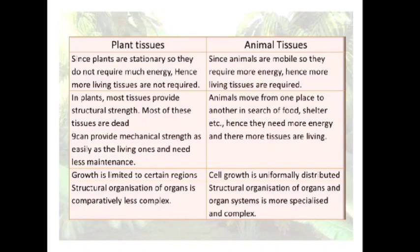In plant tissues, growth is limited to certain regions, and structural organization of organs is comparatively less complex. Whereas in animal tissues, cell growth is uniformly distributed, and structural organization of organs and organ systems is more specialized and complex.